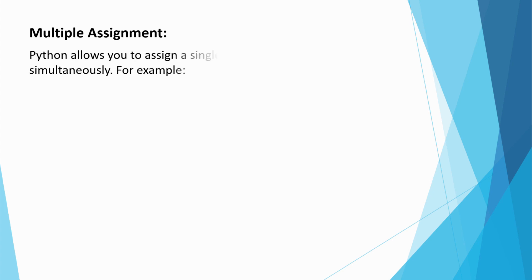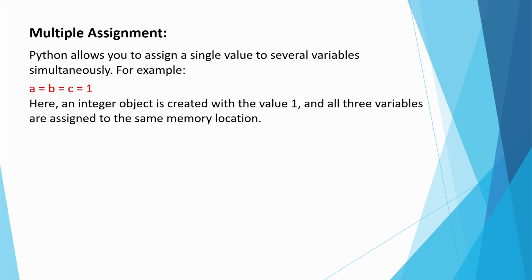Python allows you to assign a single value to several variables simultaneously. For example, here an integer object is created with the value 1 and all three variables are assigned to the same memory location. You can also assign multiple objects to the multiple variables.